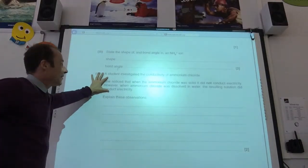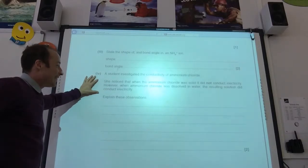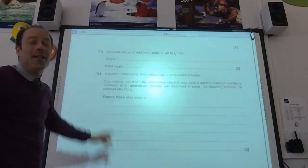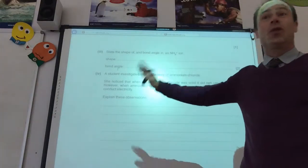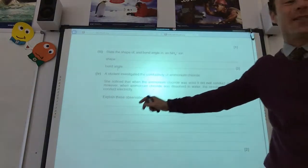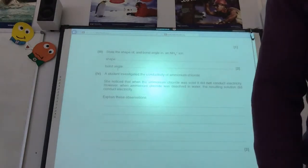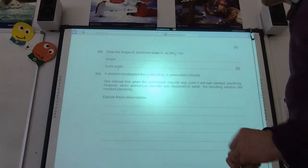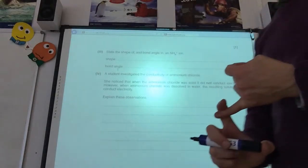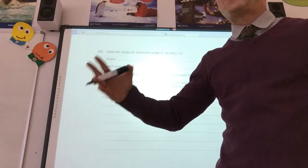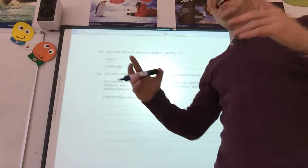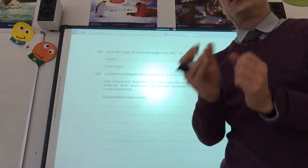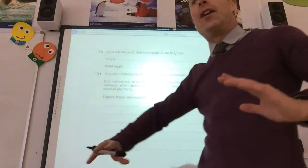A student investigated the conductivity of ammonium chloride. He noticed when it was solid, it didn't conduct electricity. But when it dissolved in water, it did explain. First thing, have they talked about it melting at all? Not talked about it melting. So, don't include anything about the fact that ionic things conduct electricity when they are molten. Not interested in that. In this question, they want it when it's dissolved in water. So, it won't conduct electricity when it's solid because the ions cannot move.